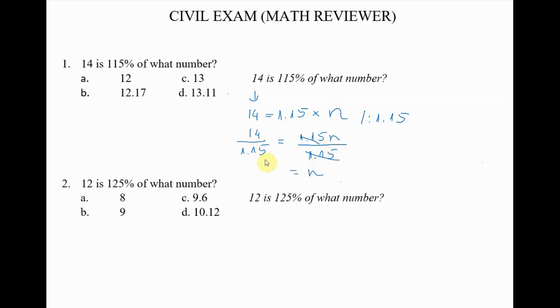n is equal to 14 divided by 1.15, that is equal to 12.17. So B is the answer here.